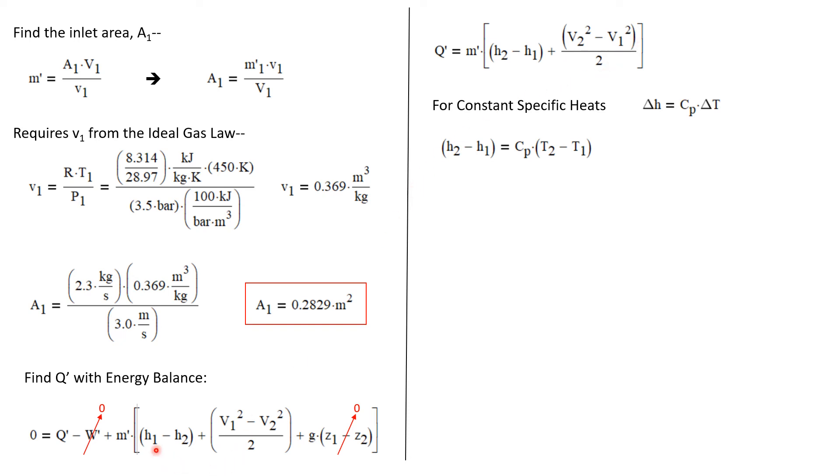So we can rewrite this energy balance and solve for Q dot. Q dot is just M dot times H2 minus H1 plus V2 squared minus V1 squared over 2. Notice, be careful here. We started with H1 minus H2, but when we move this entire expression to the left side of the equation, it became negative. The easiest way for me to deal with it is to flip the terms. H1 minus H2 becomes H2 minus H1, and V1 squared minus V2 squared becomes V2 squared minus V1 squared. So be careful in rearranging this equation.